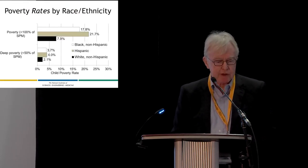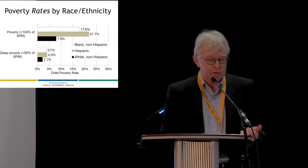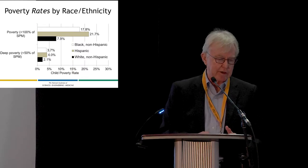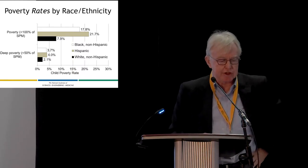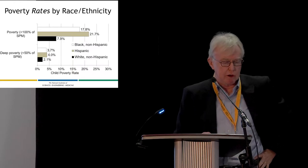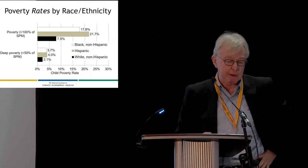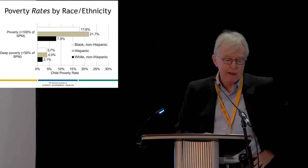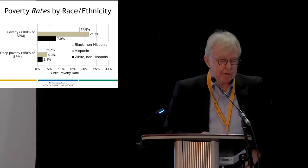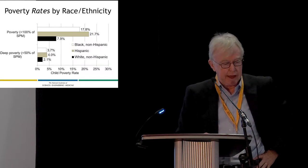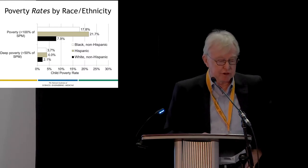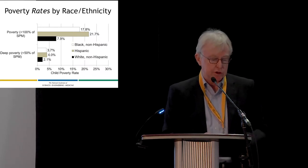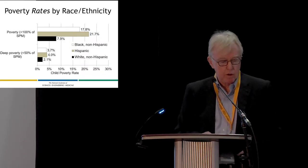Poverty rates by race and ethnicity show that the highest child poverty rates are among Hispanics in the United States, about 21.7% — one in five. It's about 17.8% for African-Americans and about 7.9% for non-Hispanic, non-African-American children. Deep poverty rates show the same pattern but are lower.